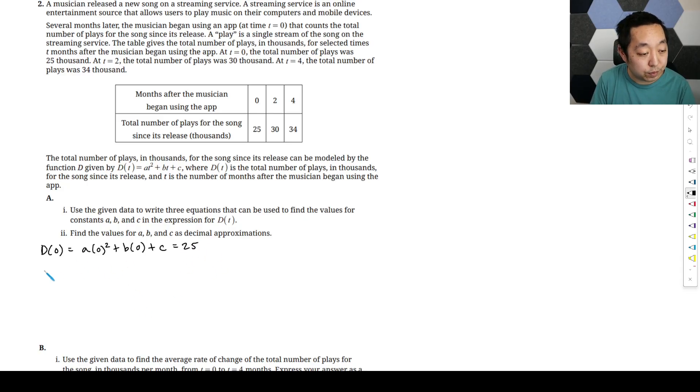So that's one equation. This is just going to tell you c is equal to 25 because these are all zero. And then D(2) is going to be a times two squared plus b times two plus c equals 30. So that implies that converts to this equation 4a plus 2b plus c equals 30.